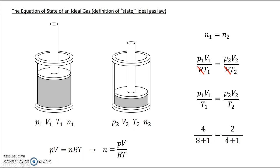So when we use the ideal gas law, we always have to use Kelvin for the temperature. We cannot use Celsius.